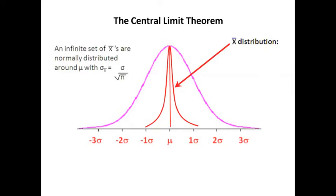then our x̄ distribution will be normally distributed around μ, with the standard deviation of the x̄ distribution equal to the standard deviation of the distribution divided by the square root of n.